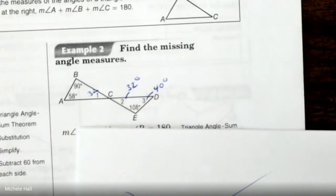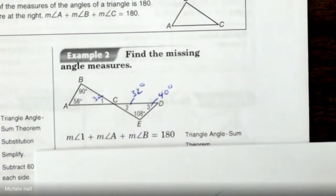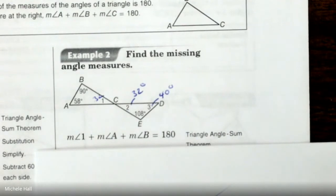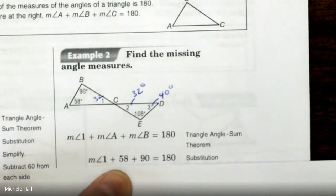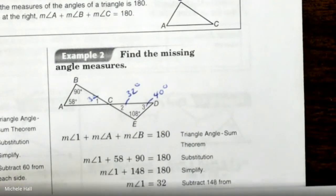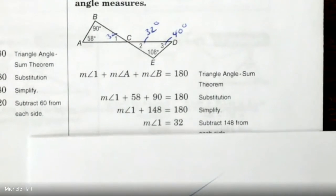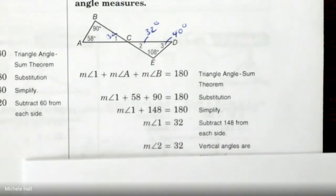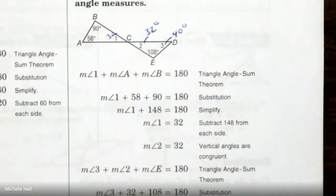Let's see what they did — did they do the same thing? They said angle 1 plus angle A plus angle B equals 180. Same thing we did. They added up 58 and 90, then subtracted from 180 and got 32. There's no other way to do it — you needed to get a number in that triangle using vertical angles. They went through the same process.